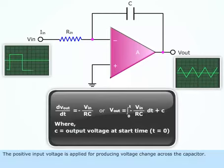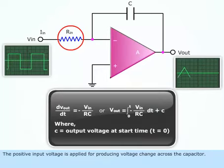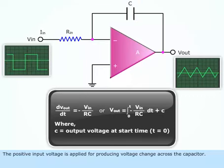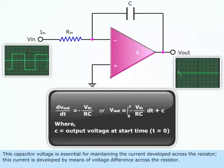The positive input voltage is applied for producing voltage change across the capacitor. This capacitor voltage is essential for maintaining the current developed across the resistor. This current is developed by means of voltage difference across the resistor.